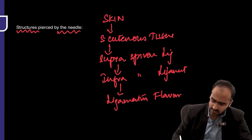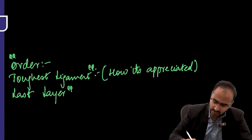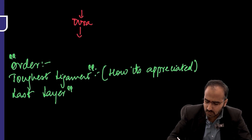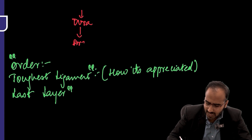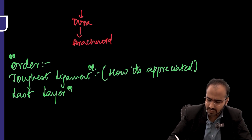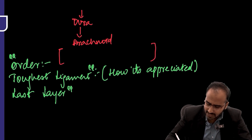After ligamentum flavum comes the dura. Once you puncture the dura, you will be in the arachnoid — the last layer. Once you puncture the arachnoid, you will be in the subarachnoid space, which contains CSF.